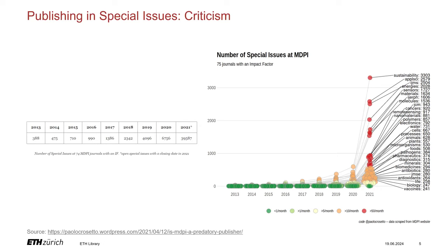The chart on the right shows the development of the number of special issues assigned to 75 MDPI journal titles with impact factor for the same period, with an equal result. Considering that MDPI is a gold publisher and therefore charges publication fees for each article, one can derive from this the development of an apparently very successful but highly controversial business model. The insight that it is possibly less about the dissemination of new scientific findings and more about the crude pursuit of profit corresponds very well with the SNSF's decision to no longer support publication fees for articles in special issues.